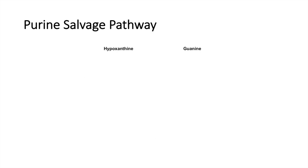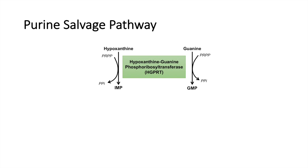So what is the purine salvage pathway? When you have hypoxanthine, which is derived from IMP, or guanine — which is a metabolized product of GMP — hypoxanthine can be reprocessed into IMP utilizing PRPP, and guanine can be reprocessed into GMP, again with PRPP. A common enzyme does both of these reactions: hypoxanthine-guanine phosphoribosyltransferase, or HGPRT. That is the important enzyme to remember for this reaction.